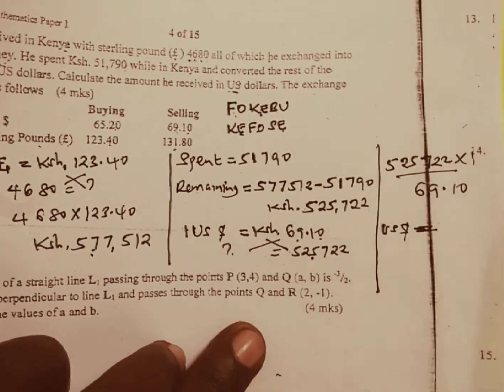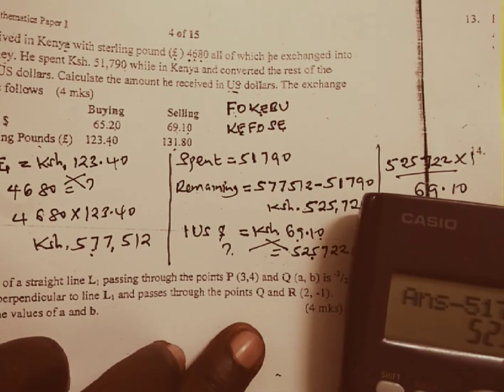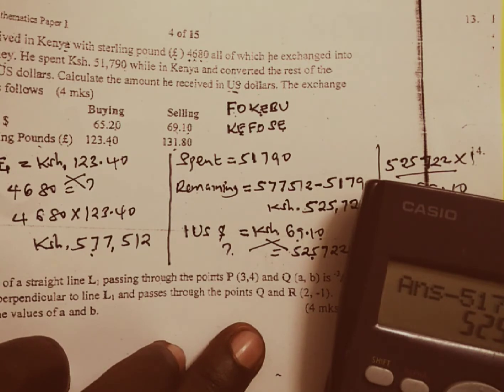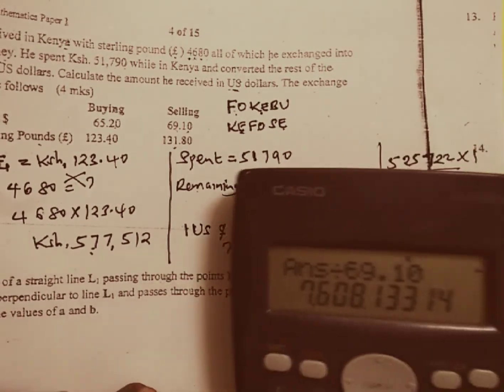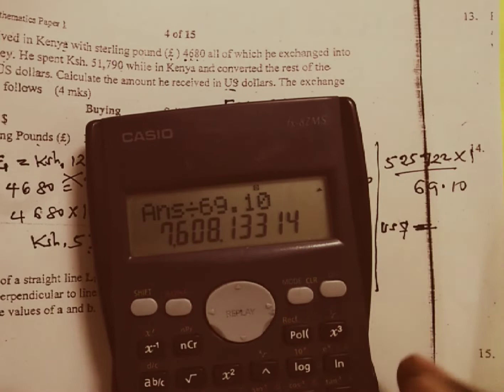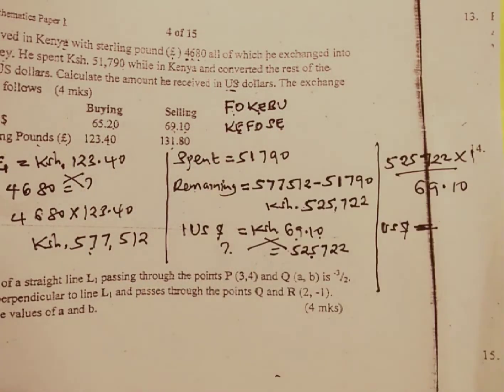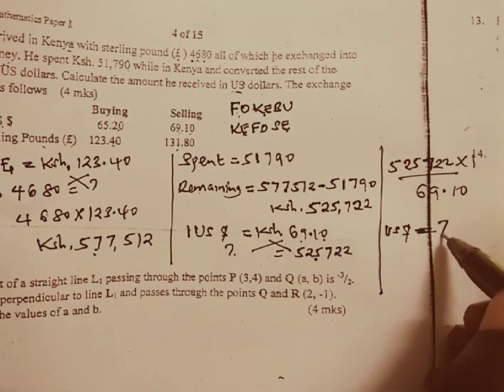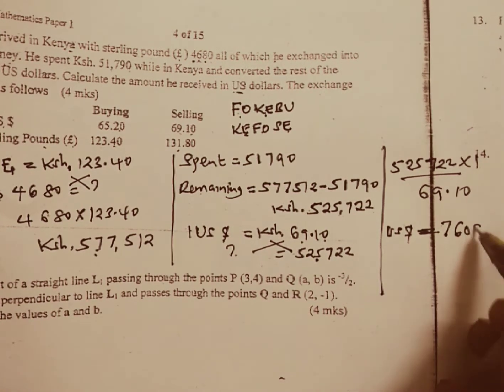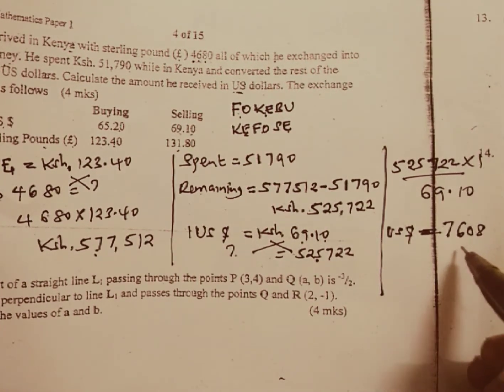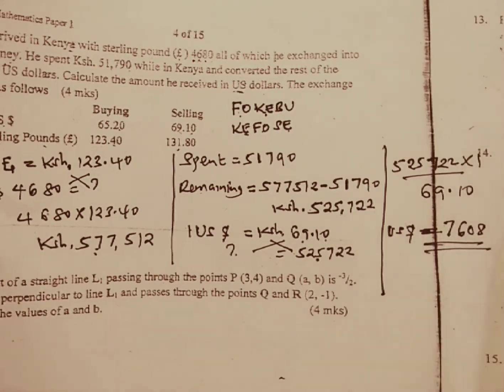This one is going to be equal to how much? We take 525,722, we divide by 69 shillings 10 cents, and this one is going to be equal to 7,608 as a whole number. And that is the answer to this particular question.